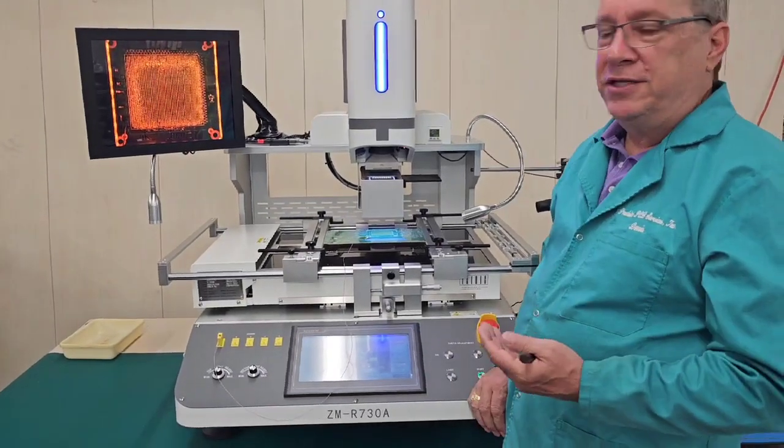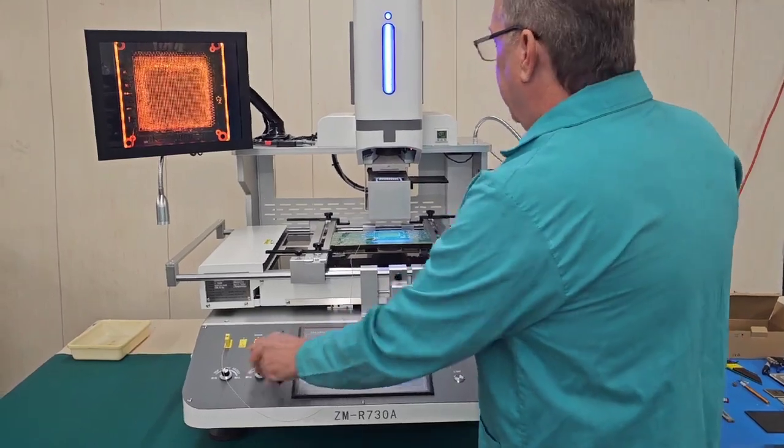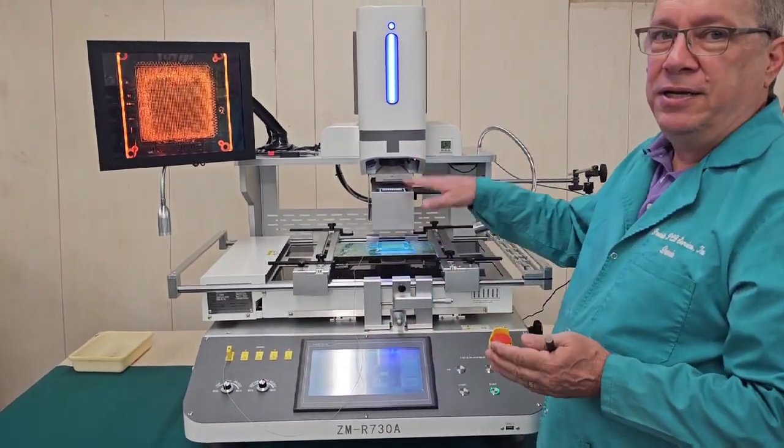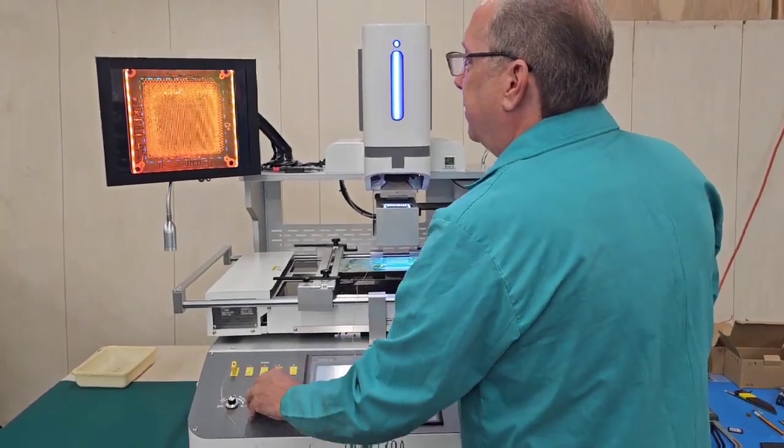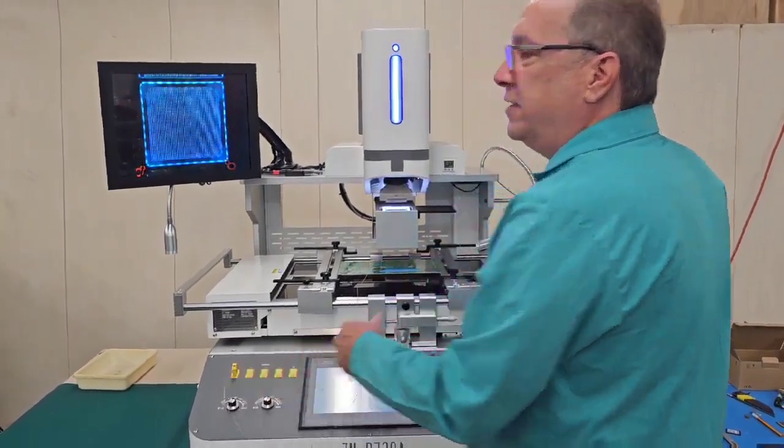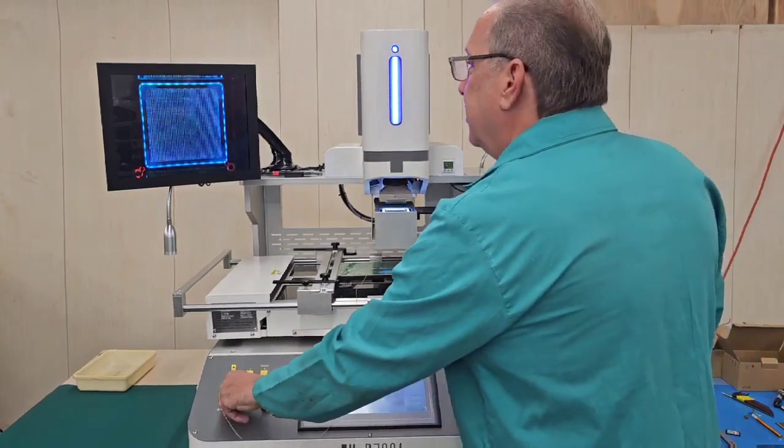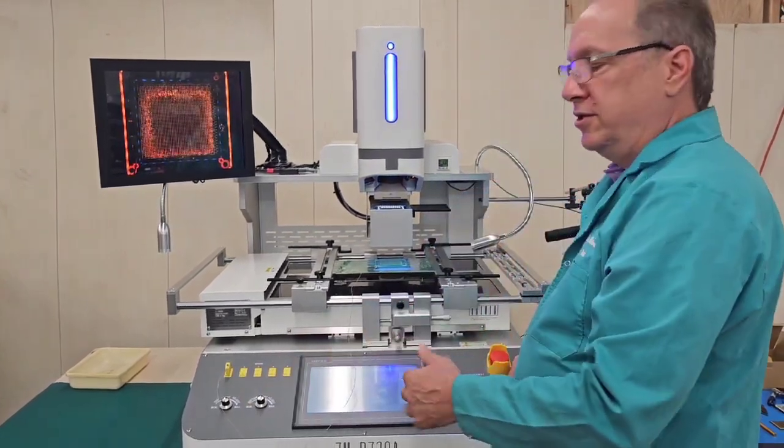And so now we have our split vision camera comes on. What this is going to do, it's going to look at the PCB pads and the BGA balls, and we'll line them up. We can adjust our lighting. The blue is for the solder balls. The gold is for the circuit board.